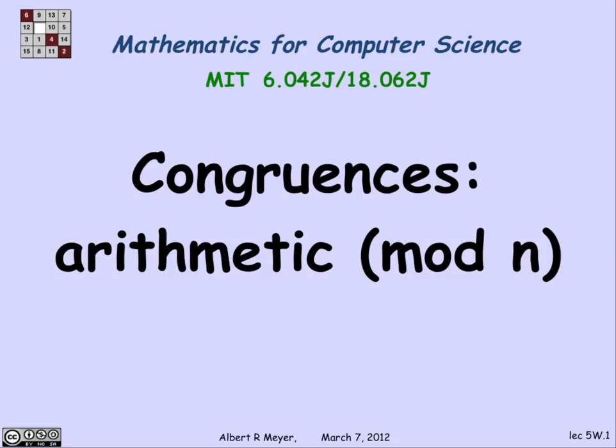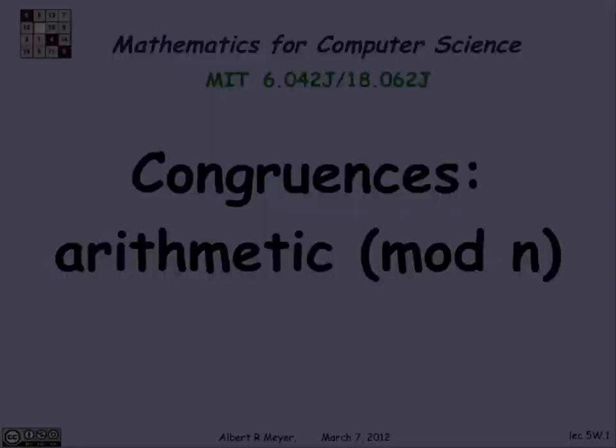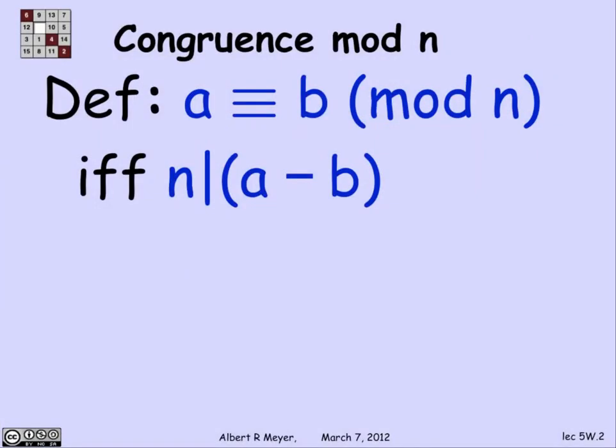Congruence also plays a role in hashing, which is a key method for managing data in memory. But we are not going to go into that application. The definition of congruence is real simple. Congruence is a relation between two numbers, a and b.